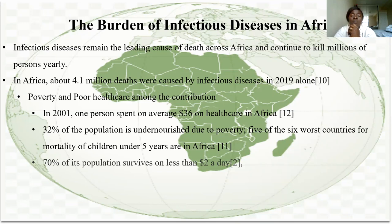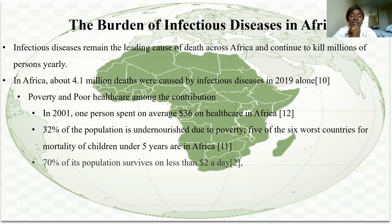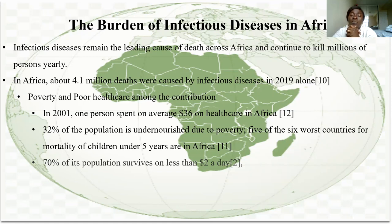In 2001, one person in Africa spent on average $36 on healthcare per year, compared to $4,800 per year in the US. Thirty-two percent of Africa's population is undernourished due to poverty, mostly affecting children — this is what causes most mortality rates for children under five. Five out of the six worst countries in the world for under-five mortality rates are from Africa.